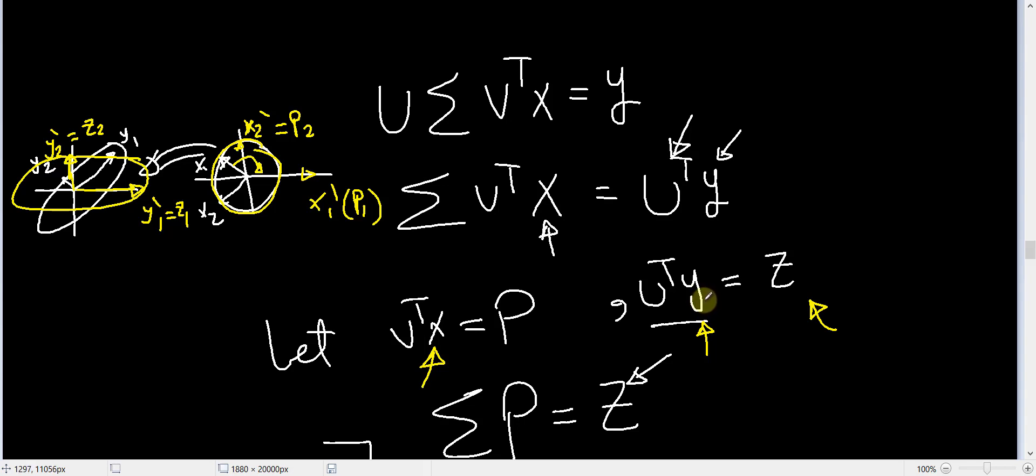The relation between the components is a diagonal relation, just a scaling relation, such that Z₁ is equal to some scaling factor σ₁ multiplied by P₁.